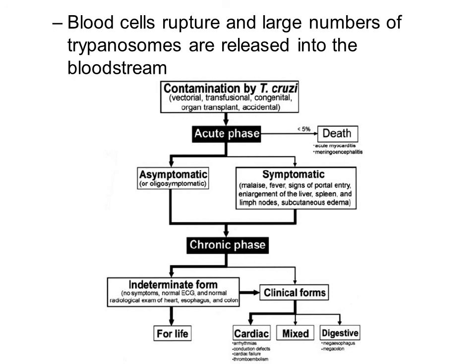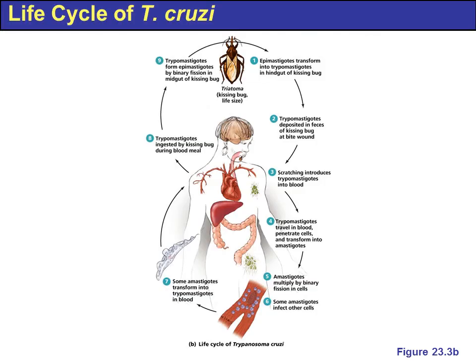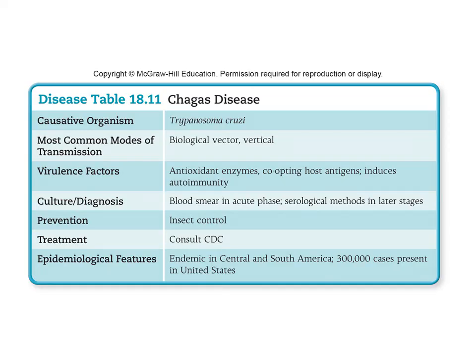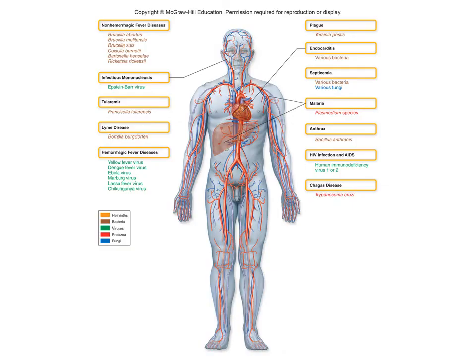Those released trypanosomes will then cause the classical symptoms of Chagas disease. This slide shows the life cycle of Trypanosoma cruzi. Table 18.1 summarizes Chagas disease. This last slide summarizes examples of microbes that affect the lymphatics and the cardiovascular system.